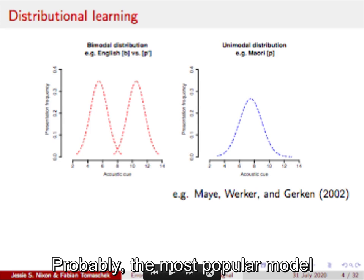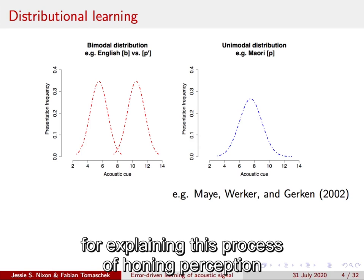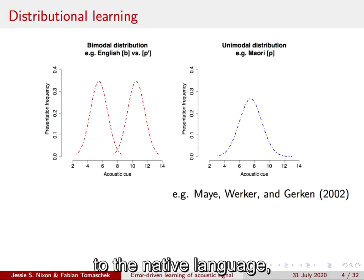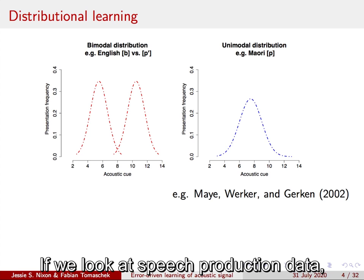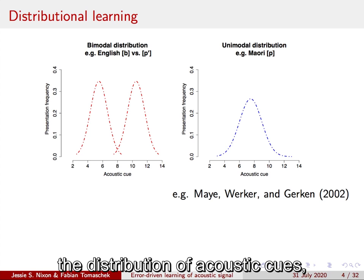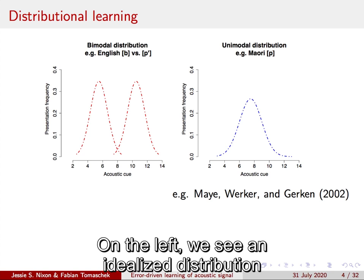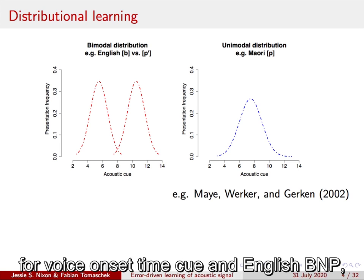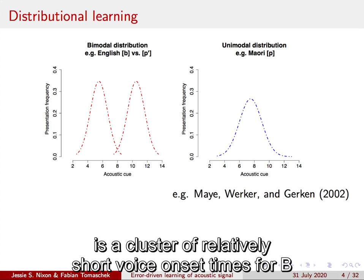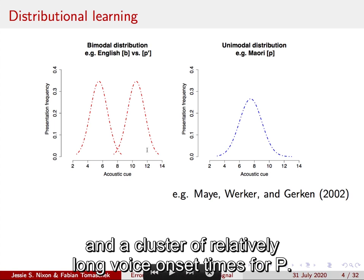Probably the most popular model for explaining this process of honing perception to the native language is distributional learning. If we look at speech production data, the distribution of acoustic cues is not uniform. Instead clusters form around particular values. On the left we see an idealized distribution for voice onset time cue in English B and P. There's a cluster of relatively short voice onset times for B and a cluster of relatively long voice onset times for P.